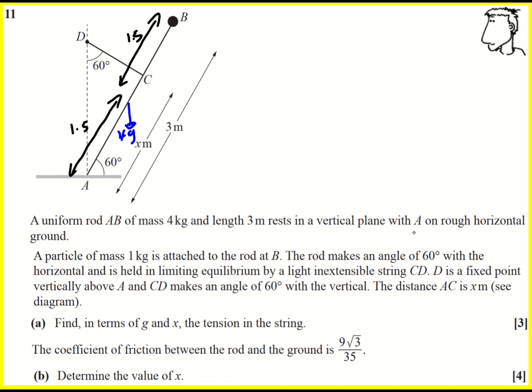It's on rough horizontal ground, we'll just underline that for a minute, bring that back in, and then a particle of mass one kilogram is attached to the rod at B. So we can sort of, they can act as a single entity, and therefore we've got a weight of G just acting down at that point.